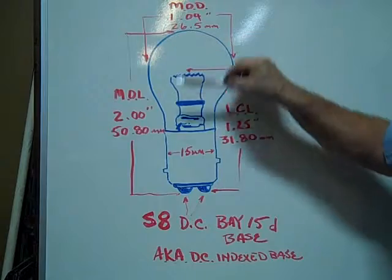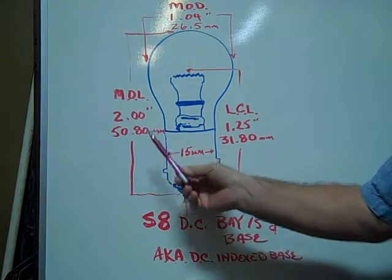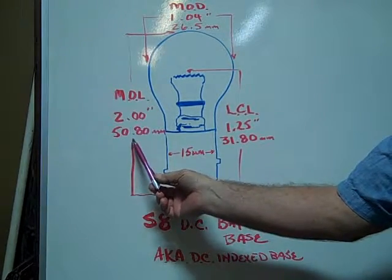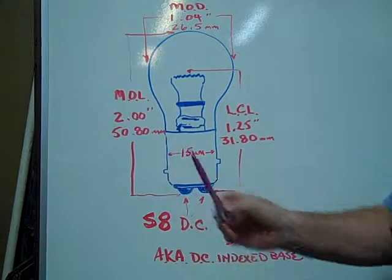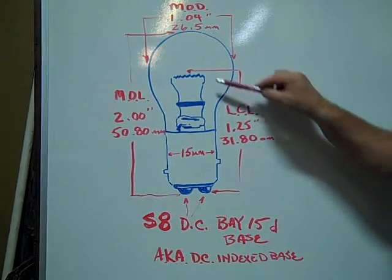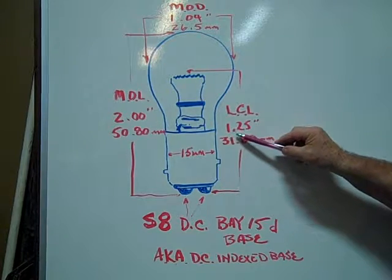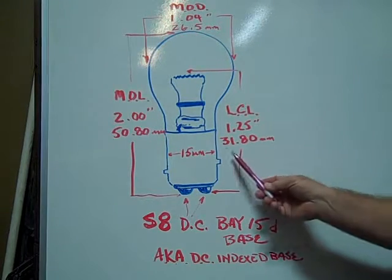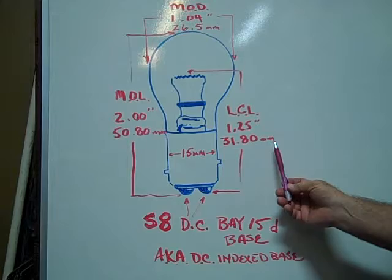The maximum overall length is 2 inches or 50.80 millimeters. The light center length is 1.25 inches or 31.80 millimeters.